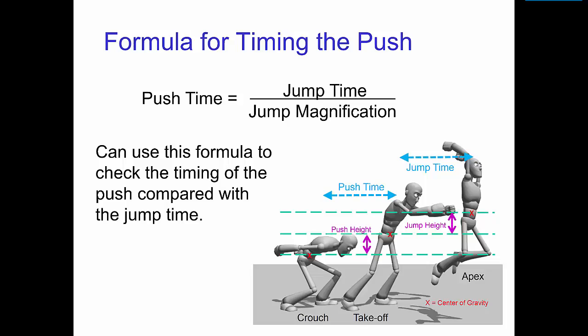We can find it as follows. The push time from crouch to takeoff equals the jump time from takeoff to apex divided by the jump magnification.